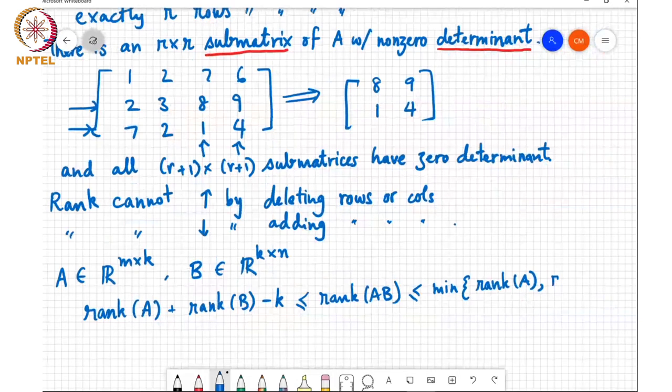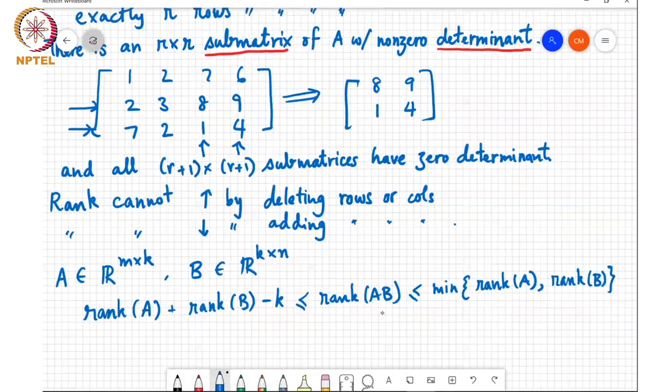So in other words, you cannot increase the rank of a matrix by multiplying it by some other matrix B - its rank is at most rank of A. Similarly, you cannot increase the rank of a matrix B by pre-multiplying it by another matrix A - its rank is at most rank of B.